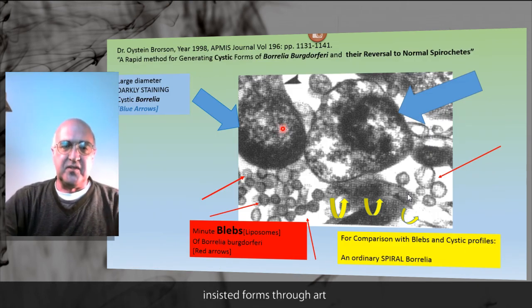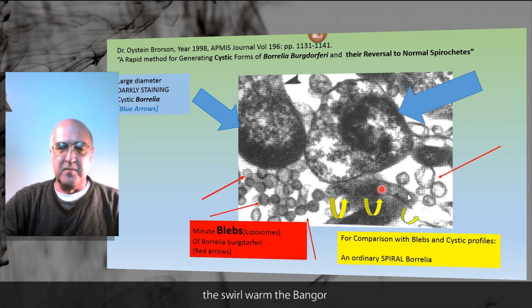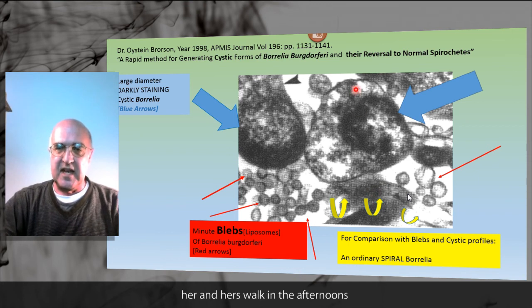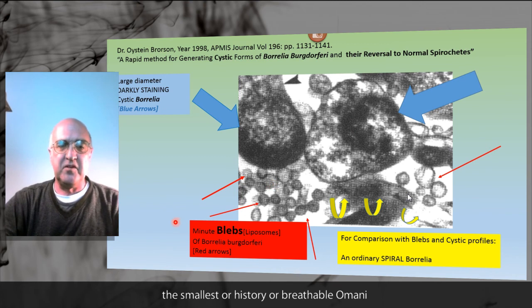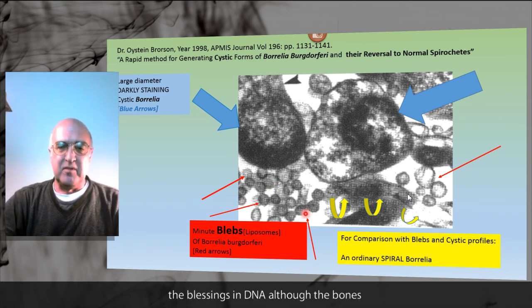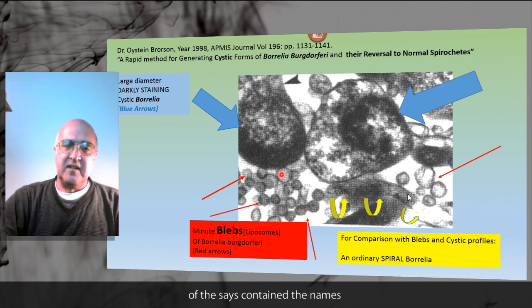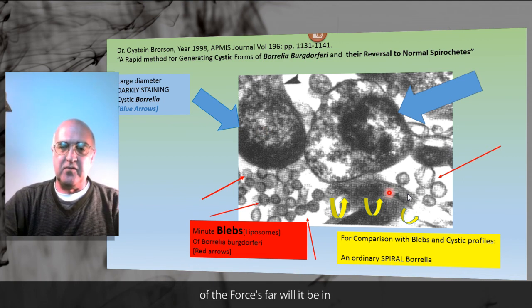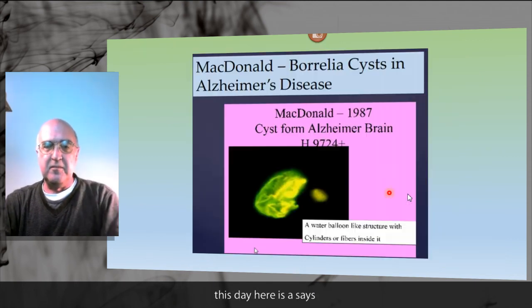This slide shows the cystic forms — very large. The spiral form: look at the diameter, which is very small. And the small mystery forms are actually what we call minute blebs, or liposomes. These blebs contain DNA of the Borrelia spirochete. The cysts contain DNA of the spirochete, and of course the spiral form contains DNA of the spirochete.